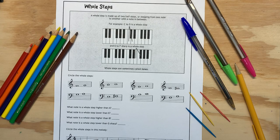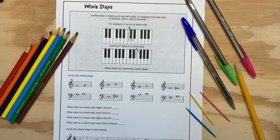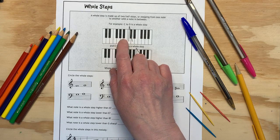We're looking at page 16 in the packet. These are challenging pages. This one is about whole steps. A whole step is made up of two half steps. Two halves make a whole, or stepping from one note to another with a note in between. Not just a note, but on the keyboard, it's with a key in between.